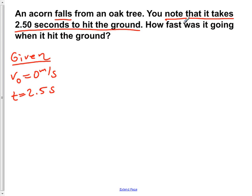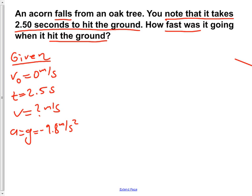Now they want to know how fast was it going when it hit the ground. So they're curious about v final. They want to know what our final velocity was. And we also know that our acceleration is equal to the acceleration due to gravity which is negative 9.8 meters per second squared.